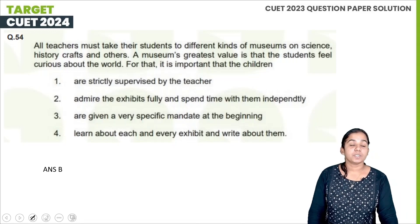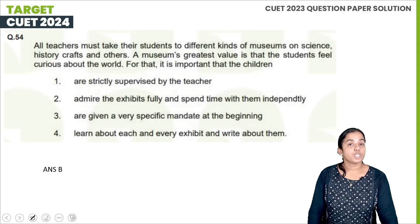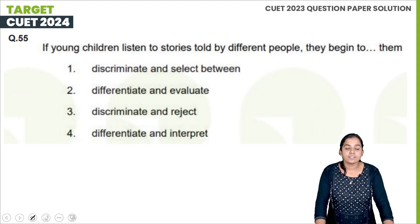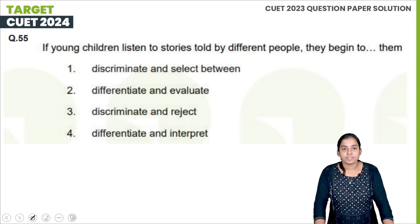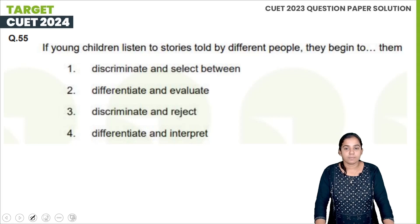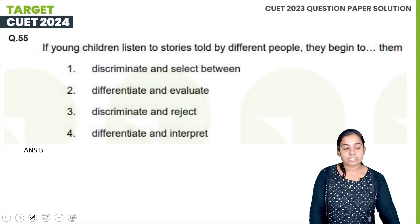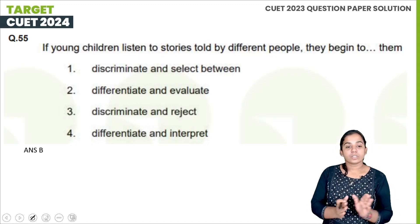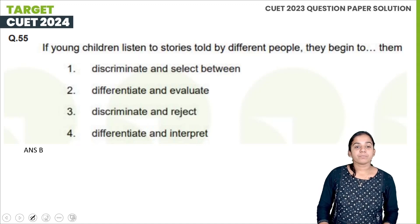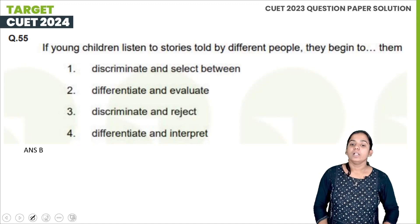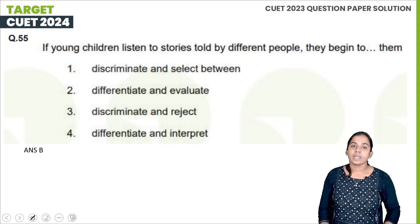From teaching aptitude, next question: If young children listen to stories told by different people, they begin to — discriminate and select; discriminate and reject; differentiate and evaluate; or differentiate and interpret them. If young children listen to stories told by different people, they begin to differentiate these stories and evaluate them.